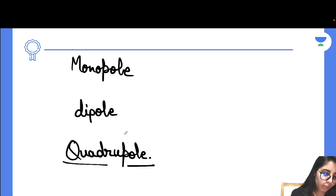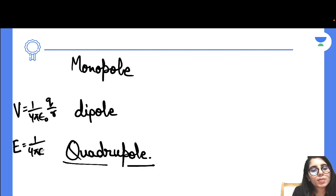So guys, first of all if I will ask you to recall the normal, the basic expression of potential. So I think everybody knows about it, the basic expression. It's 1 over 4 pi epsilon not q over R. And if I will ask you to recall the electric field expression, so 1 over 4 pi epsilon not q over R square.